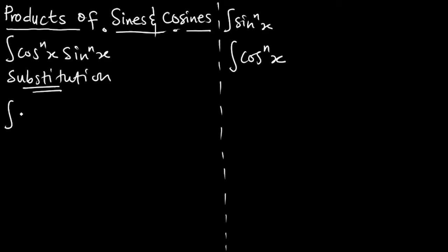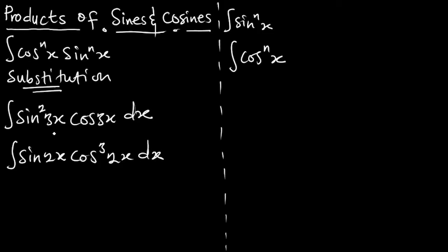For example, we can see integral of sine squared 3x multiplying cos 3x dx, or we may see integral of sine 2x multiplying cos cube 2x dx. They are multiplying two trig functions sine and cosine. What we see here, first we see that the angles are the same.